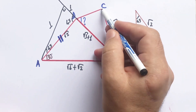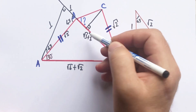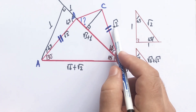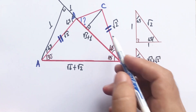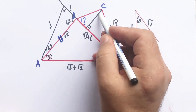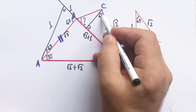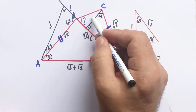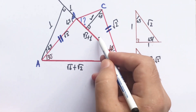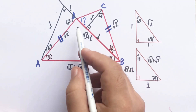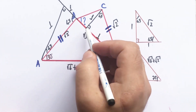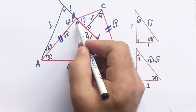Let's draw a one unit across the 45 degrees. If there is root two across the hypotenuse, these two sides must be one unit each. Therefore, root three is left here.